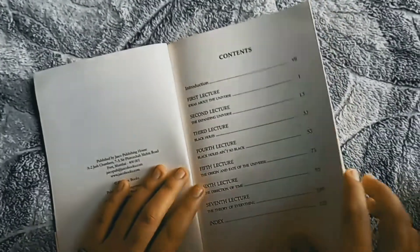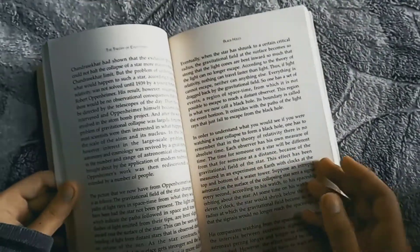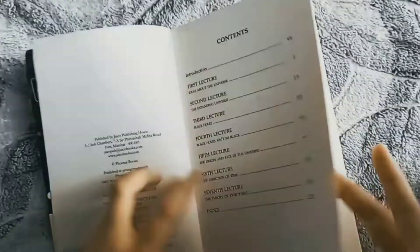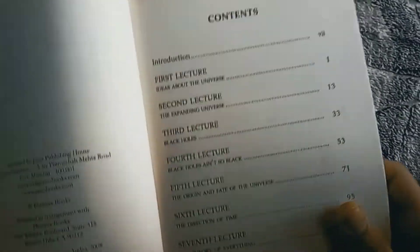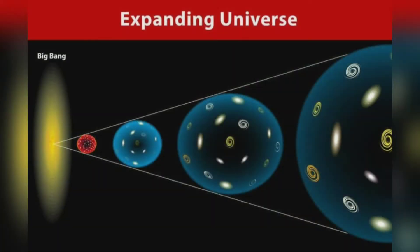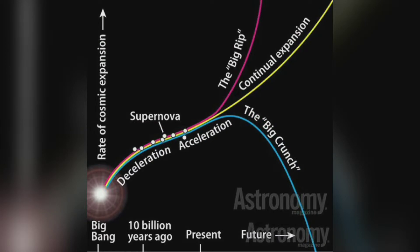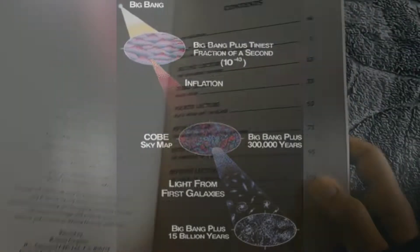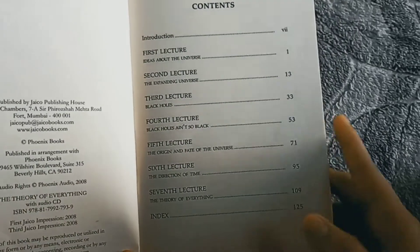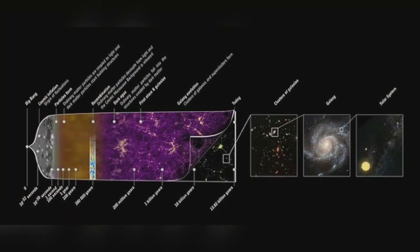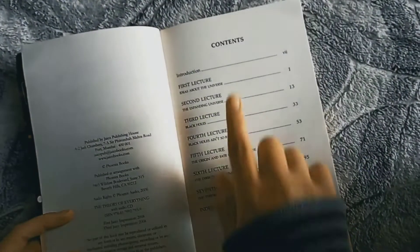In this book, Hawking talks about the origin and fate of the universe. It has seven lectures about the expanding universe, black holes, the origin and direction of time, and more. The first and second lectures are basically about whether the universe continuously expands, and the beginning of the universe — that is, the Big Bang Theory — is also explained in the lectures. The third and fourth lectures are about black holes, which is also Hawking's favorite subject.